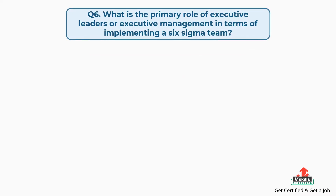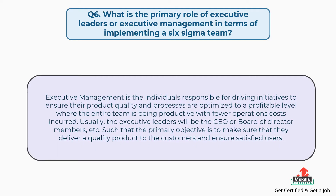Question number six: What is the primary role of executive leaders or executive management in terms of implementing a Six Sigma team? Executive management are the individuals responsible for driving initiatives to ensure their product quality and processes are optimized to a profitable level where the entire team is being productive with fewer operations costs incurred. Usually, the executive leaders will be the CEO or board of director members, etc. Their primary objective is to make sure that they deliver a quality product to the customers and ensure satisfied users.